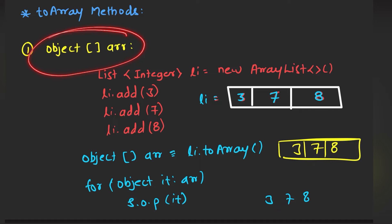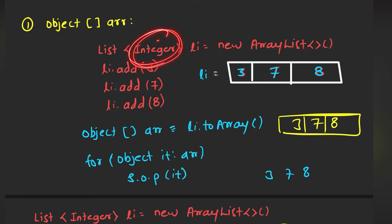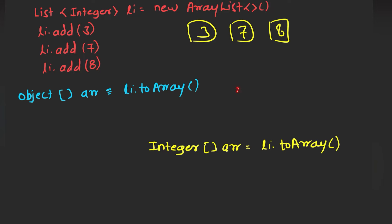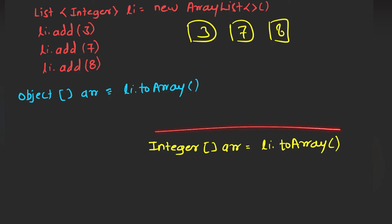Now let's check out the disadvantage of the object array. Say for example, I have declared the list containing values 3, 7, and 8. I want to convert it into an integer array. Since it contains an object, is it possible to convert directly into integer? No — because this is an object. We cannot convert it to a primitive data type. If I try to execute this line, it will simply give me an error because we cannot convert Object to integer data type.